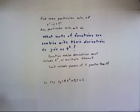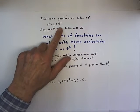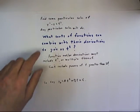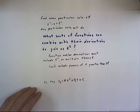So let's look at the problem of finding a particular solution to our equation y double prime minus y equals t squared. Remember, any particular solution will do.